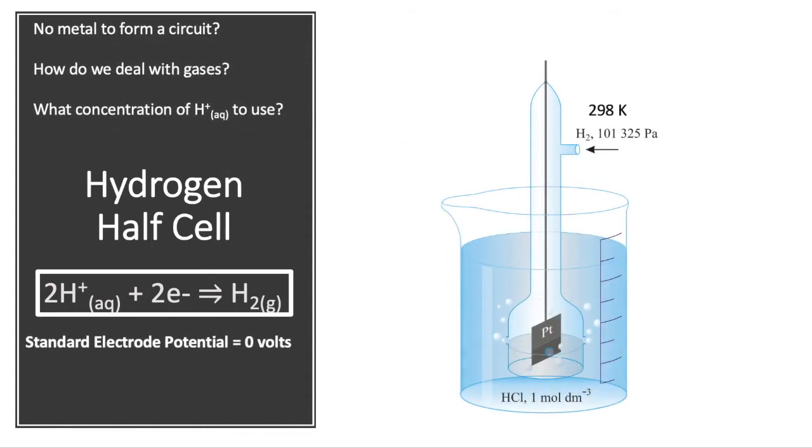Well, the way we do it is that we always use concentrations when we're measuring these electric potentials of one mole per decimeter cubed. So the H⁺ will be there in one mole per decimeter cubed. And the metal we choose where we don't have a metal in our half cell is platinum. The pressure is one atmosphere or 101,325 Pascals and temperature is always at 298 Kelvin.